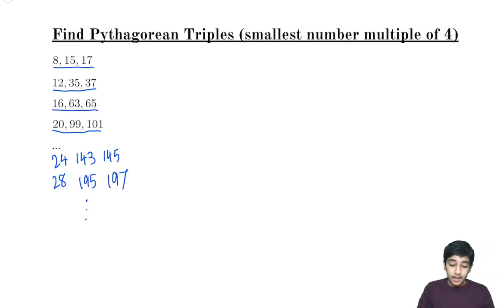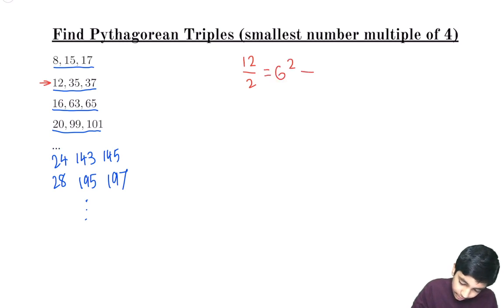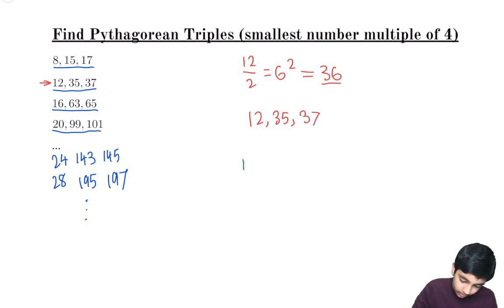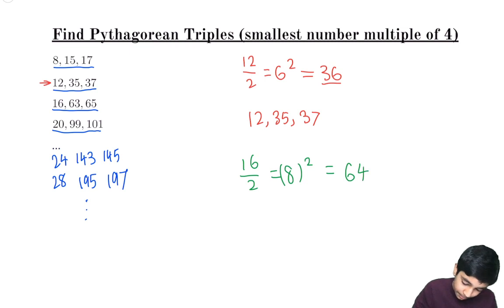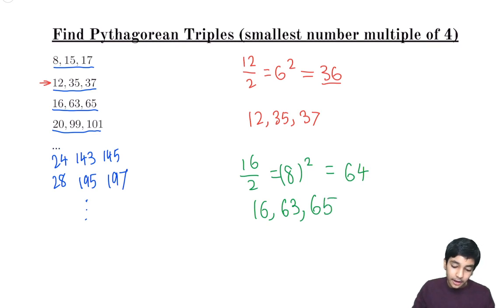There's a trick, just like the previous one, to calculate these. Let's take 12, 35, 37 as an example. We divide 12 by 2 to get 6, then square that to get 36. So the Pythagorean triple is 12, then 36 minus 1 which is 35, then 36 plus 1 which is 37. Similarly, 16 divided by 2 equals 8; we square 8 to get 64. So the Pythagorean triple is 16, 64 minus 1 which is 63, and 64 plus 1 which is 65.